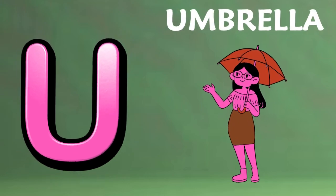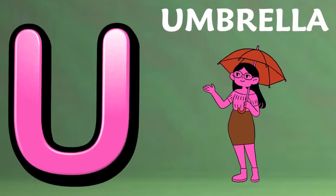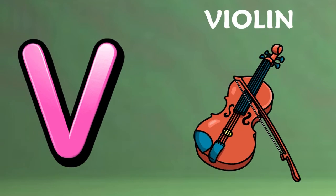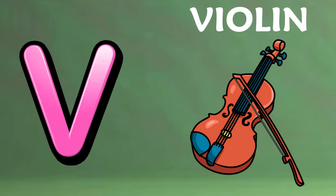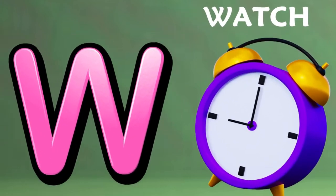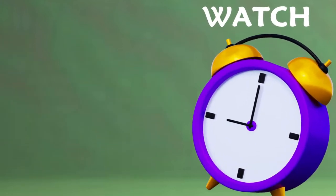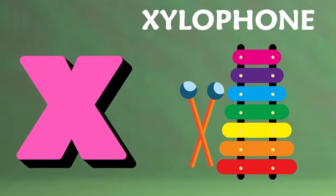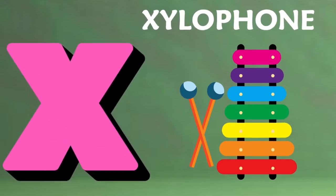U is for umbrella, u-u-umbrella. V is for violin, v-v-violin. W is for watch, w-w-watch. X is for xylophone, x-x-xylophone.